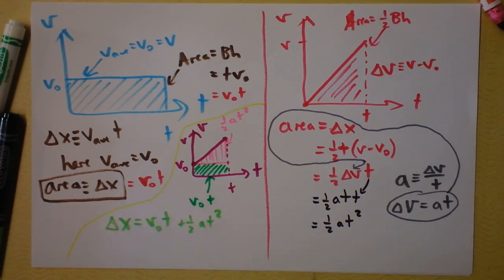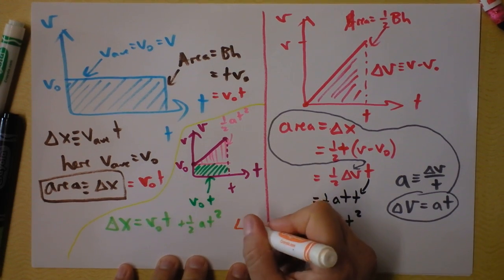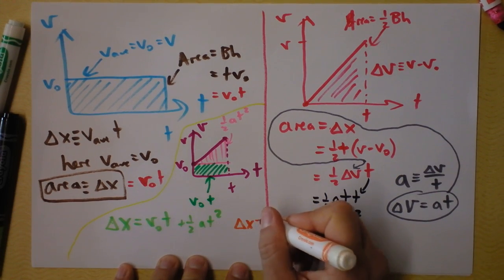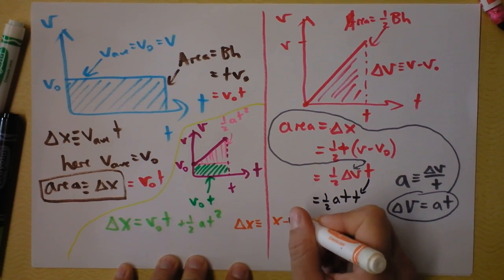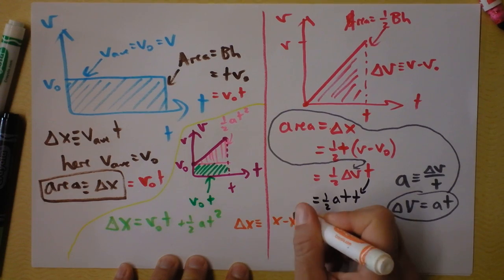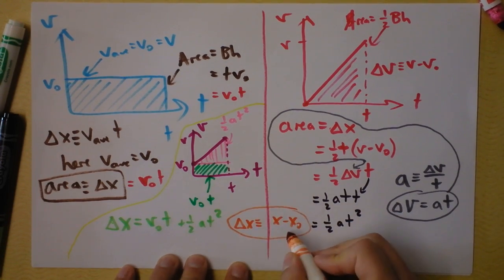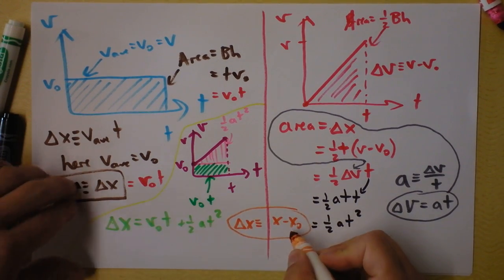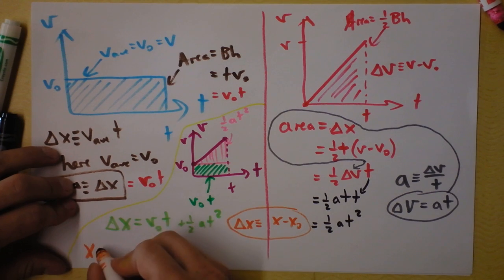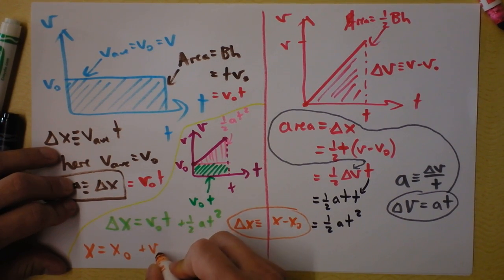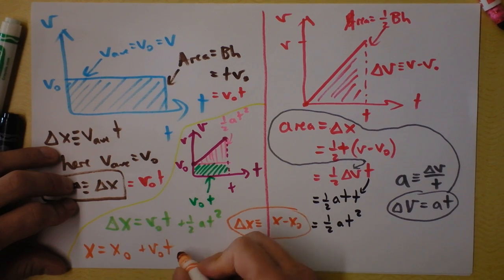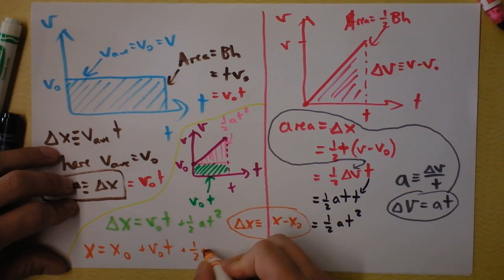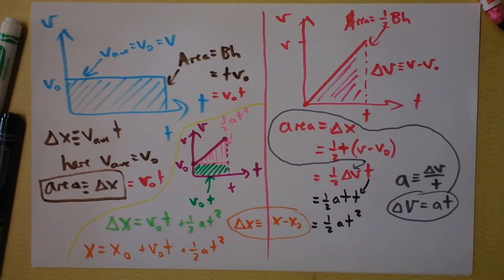Then I point out that delta x is x minus x-initial, and I add x-initial to both sides, enabling me to say that where you are is where you started, plus your velocity's effect on your position, plus your acceleration's effect on your position. And that's all.